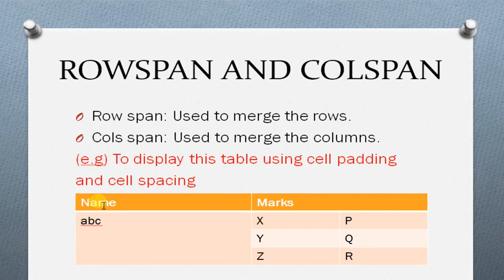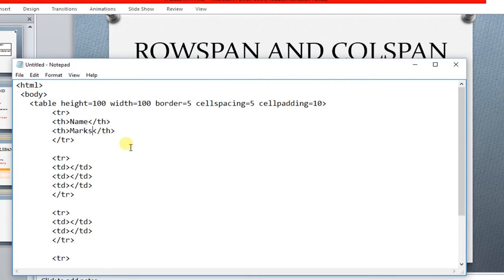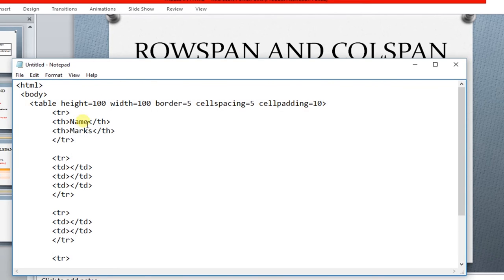Now I am going to write an HTML code for displaying this table. In this table, the header has name and marks, and under the marks header I have merged two columns together. I have created my table with height 100, width 100, border 5, cell spacing value as 5, and cell padding value as 10. My first header is name and marks, and in the marks header I have given colspan value as 2, which will merge two columns together.